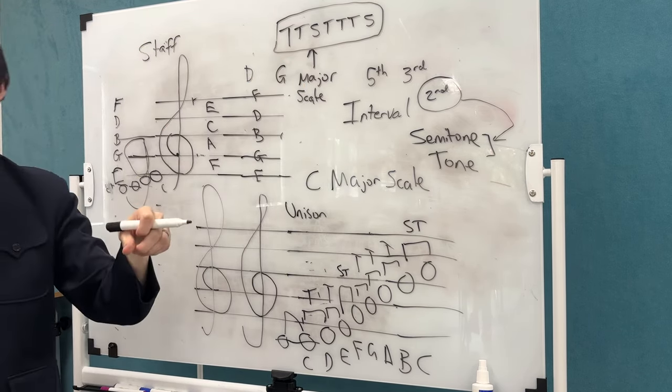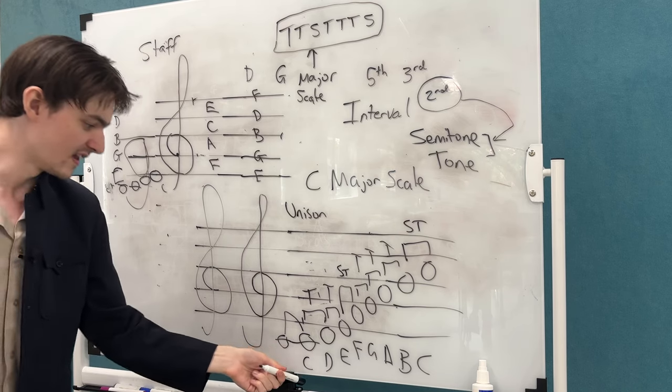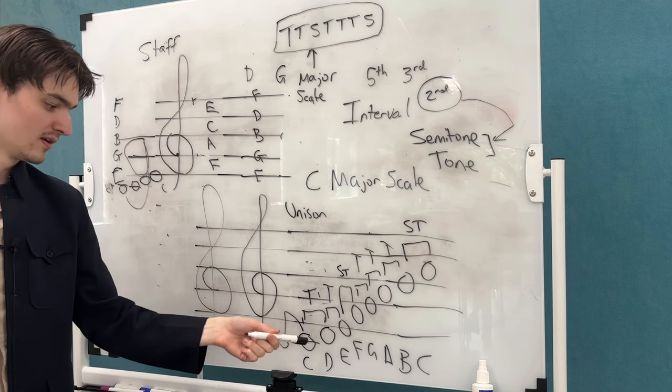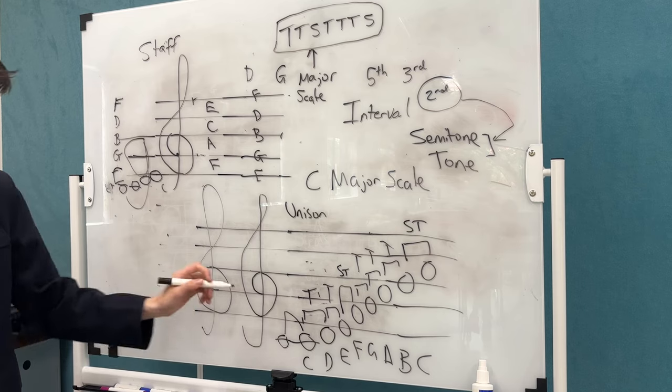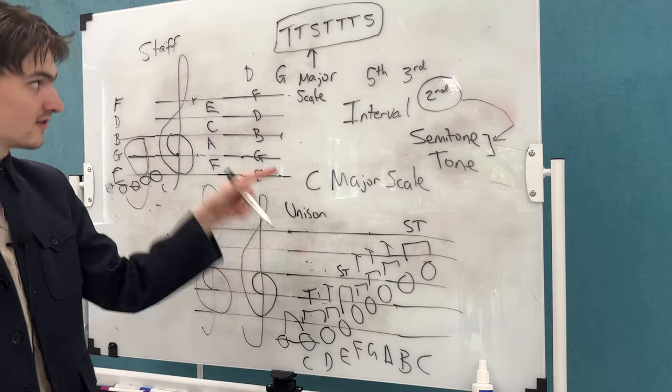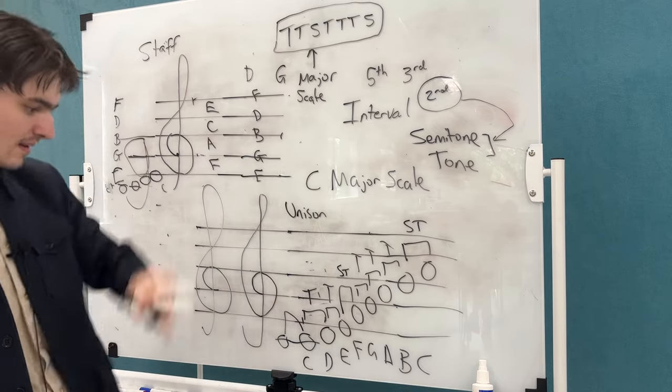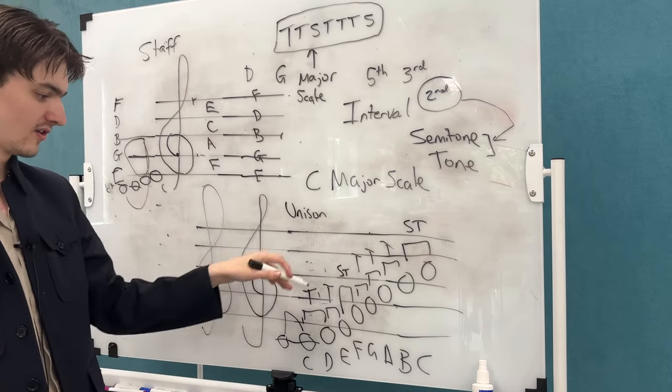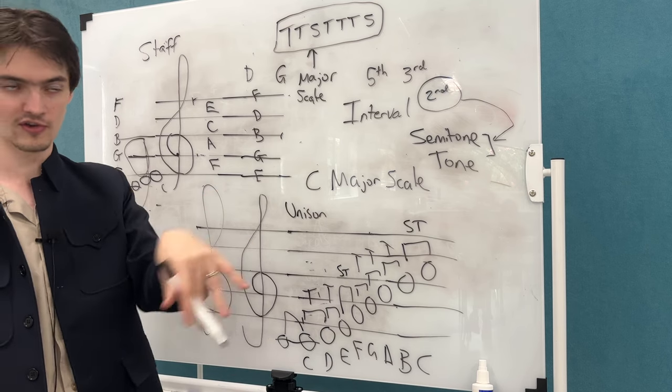So when I start counting my semitones, I don't go C as a tone. I go C to D as a tone. It's the relationship. So you go C to D, tone. D to E, tone. E to F, semitone. F to G, tone, and so on. Tone, tone, tone, semitone.